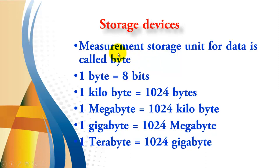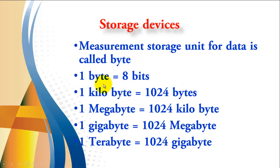To measure storage capacity, we have a measurement unit for data called the byte. When we collect 1000 bytes, we get a kilobyte — so 1 kilobyte equals 1024 bytes, making the kilobyte bigger than the byte. For the kilobyte, if you collect 1000 kilobytes, you get a new unit called the megabyte. So the megabyte is bigger than the kilobyte, and 1 megabyte equals 1024 kilobytes.